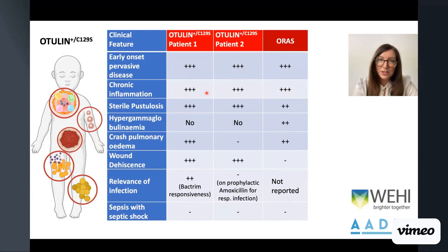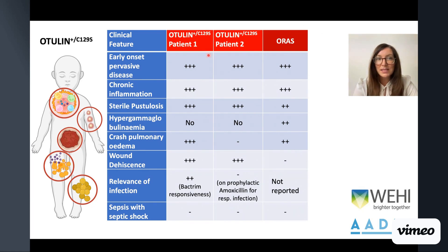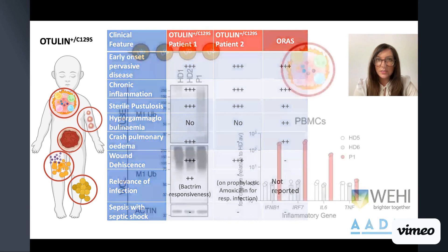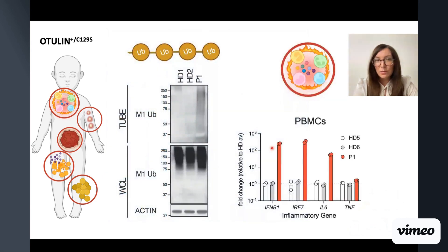Furthermore, biallelic loss-of-function mutations in otulin result in otulin-related autoinflammatory syndrome, or ORAS, which has a remarkably similar clinical phenotype to what we observe in our patients. Consistent with ORAS at a molecular level, we see accumulation of linear ubiquitin chains in patient fibroblasts and increased inflammatory gene transcription in patient PBMCs.